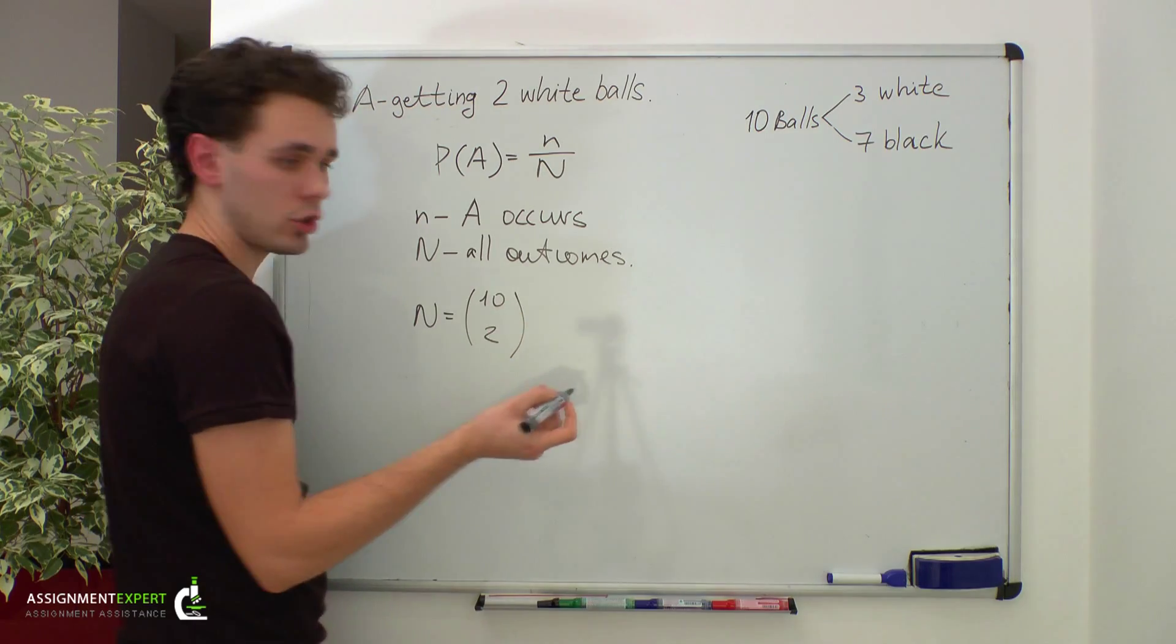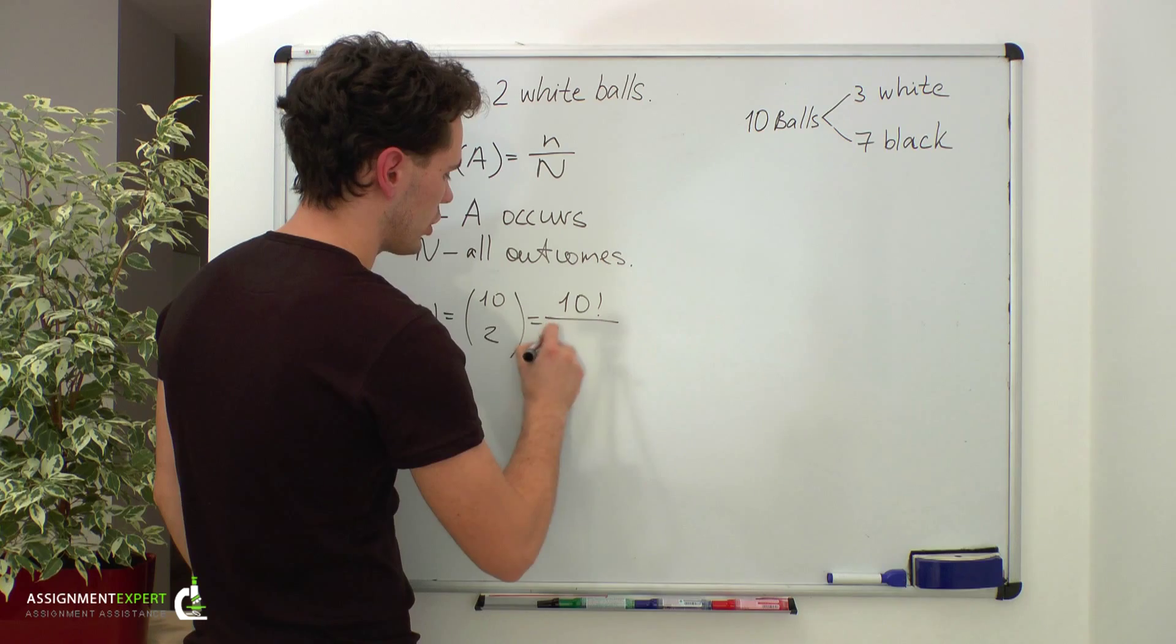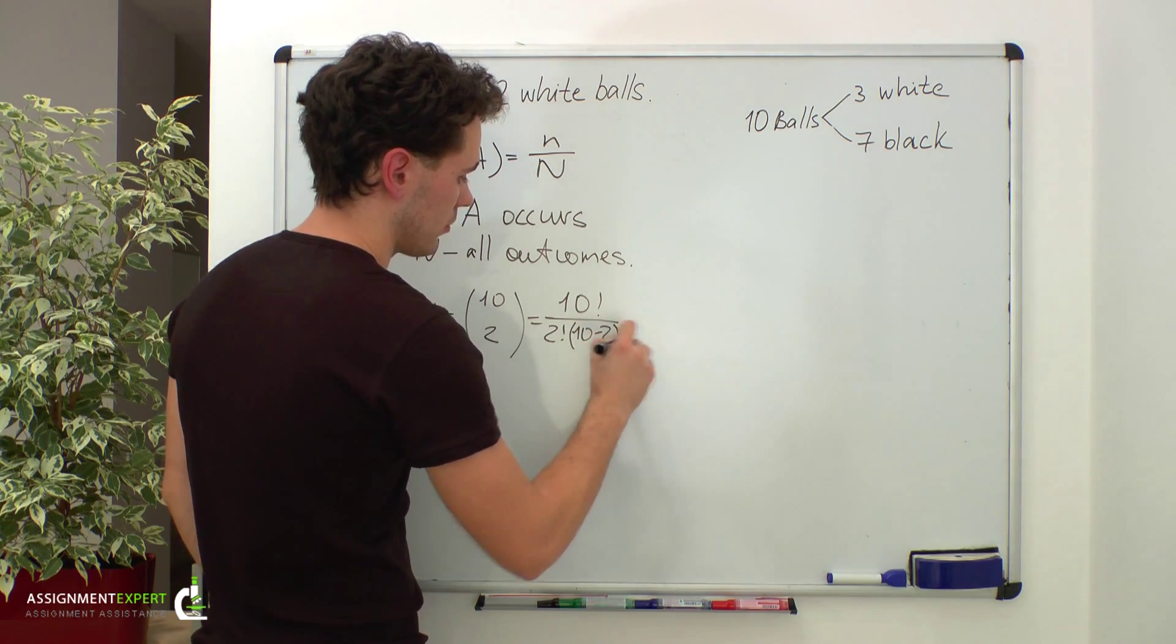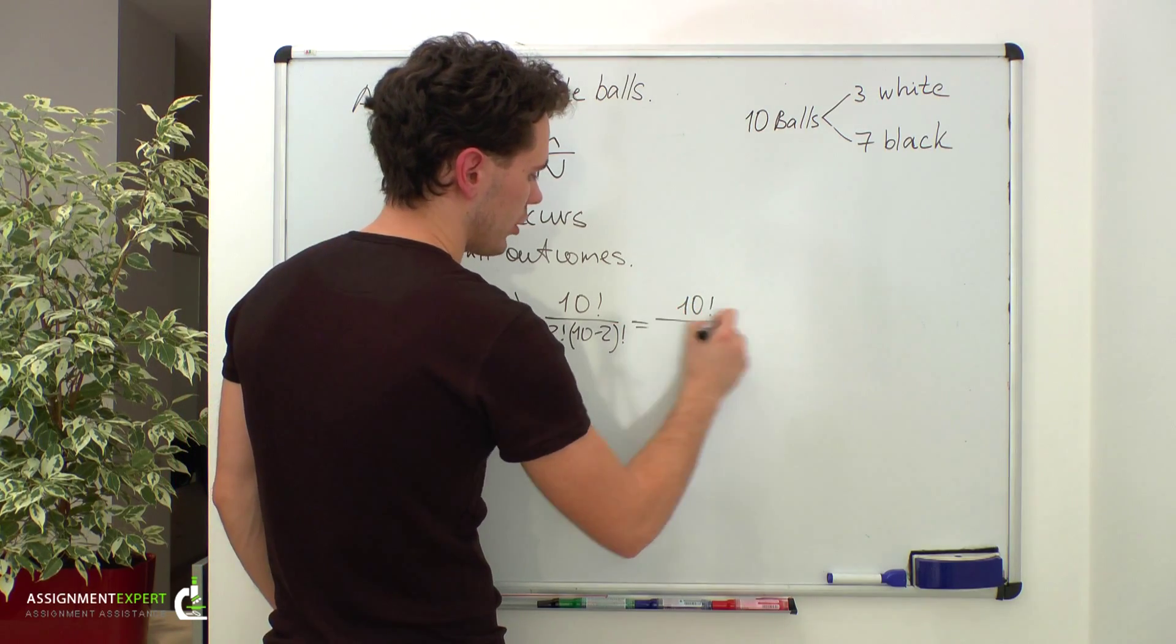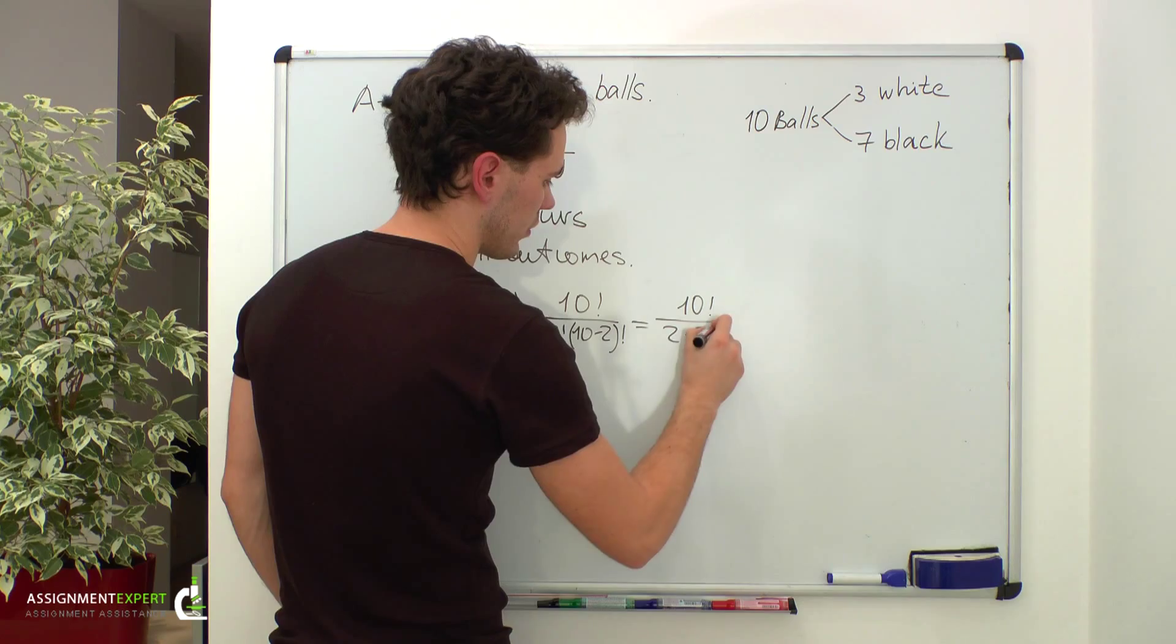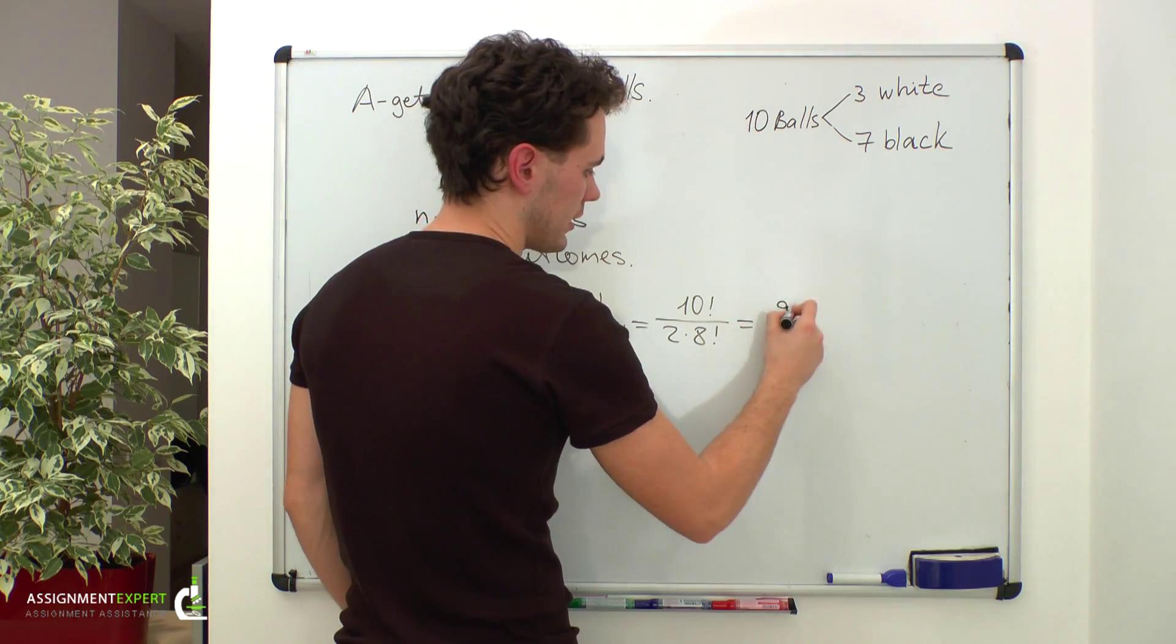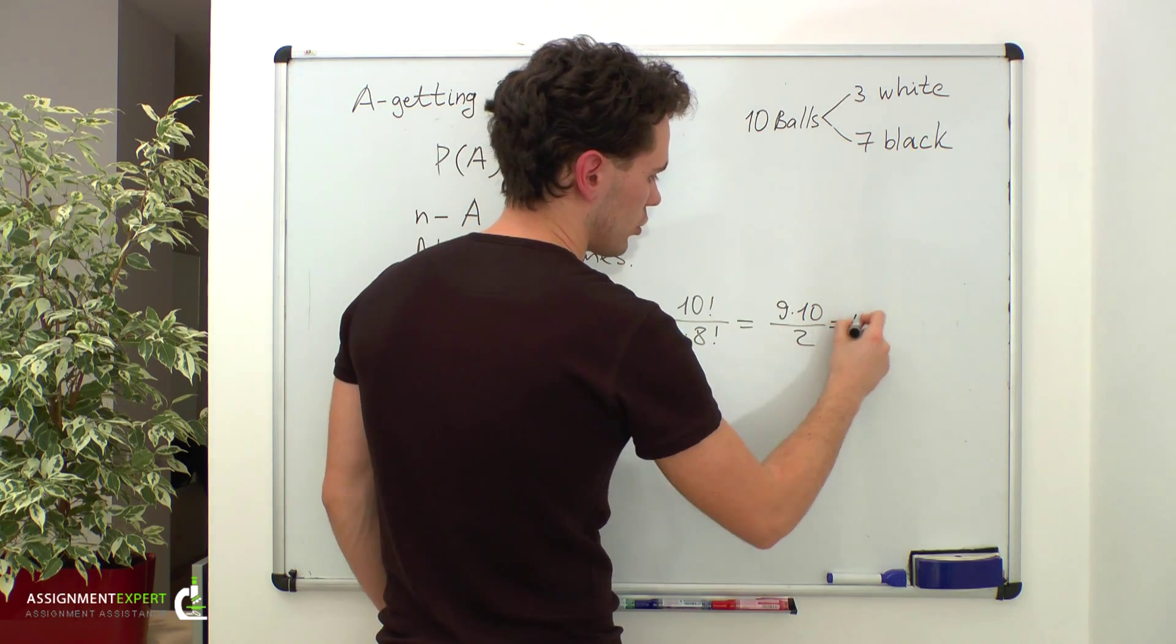Using factorials, we get ten factorial over two factorial times ten minus two factorial. This gives us ten factorial over two times eight factorial. Reducing the factorials, we get nine times ten over two, which equals 45.